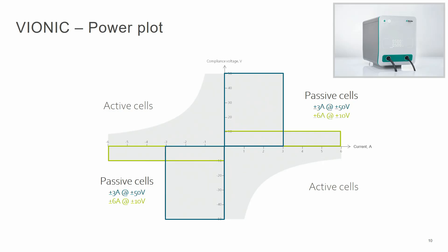These different modes are represented by the four quadrants. In quadrant 1 and 3 the power is positive, which means that energy is brought into a passive cell — typical examples are electrolysis and electrosynthesis cells. In quadrant 2 and 4 the power is negative, which means that energy is taken out of the cell — typical examples are batteries or fuel cells. For our measurement we will stay in the first quadrant, because we will use a passive cell doing electrolysis.